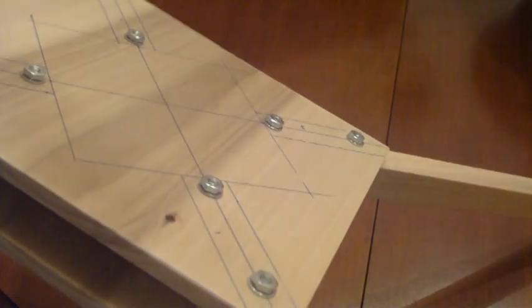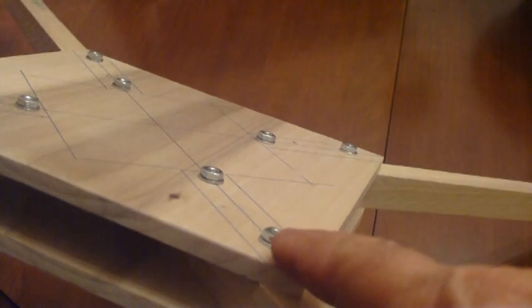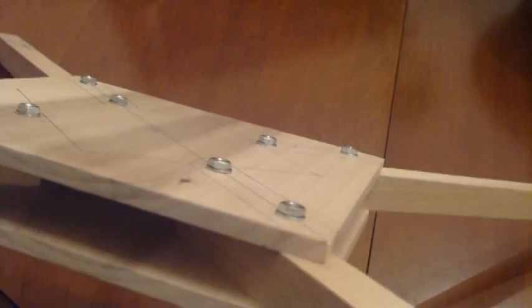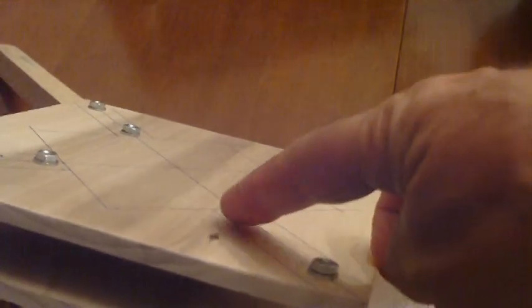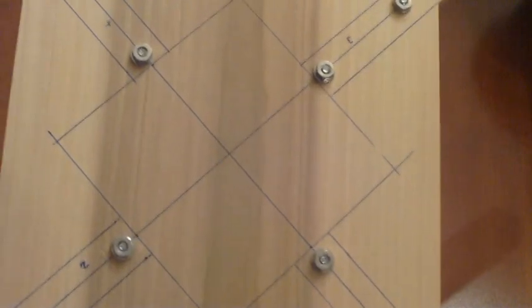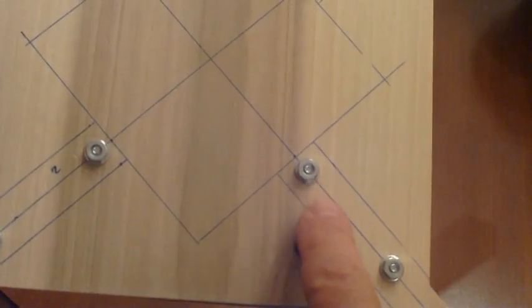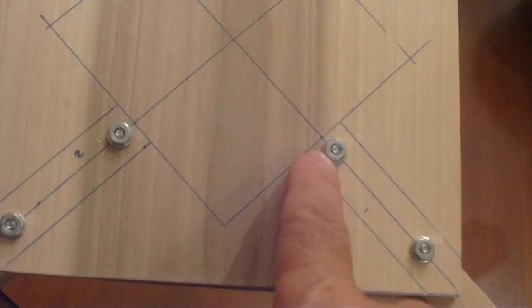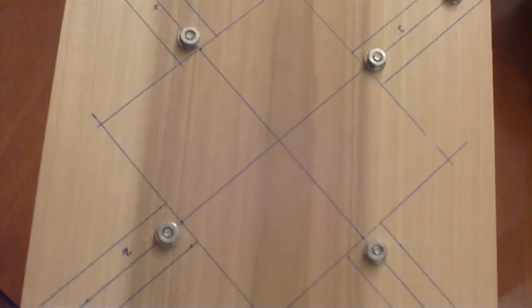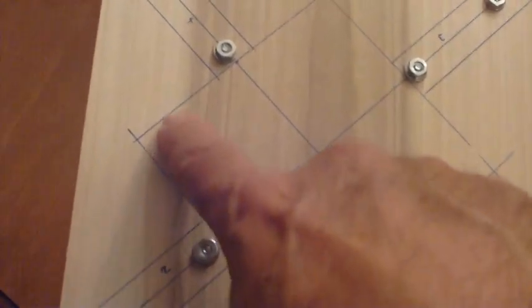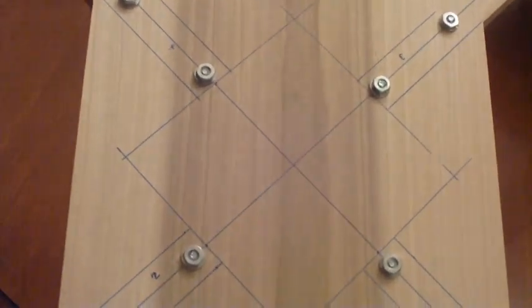Notice how this is assembled. The 6-32 bolts, inch and a half long. These are two inches on center, quarter inch poplar. Notice that the beams do not meet in the center. If you look at this diagram here, this is essentially what's going on. They will come up to this point. This forward bolt is a quarter inch from the end of the beam.